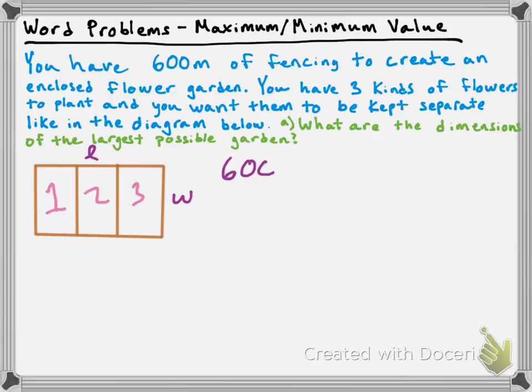Remember that you have 600 meters of fencing, and that covers the outer perimeter but also those two interior sections — those two extra widths going up and down. So let's build an equation to relate the length and width. We have a length of fencing along the top and a length along the bottom, so two lengths. We also have a width on the right, a width on the left, and those two interior widths — so four widths total. Therefore: 600 equals two lengths plus four widths.